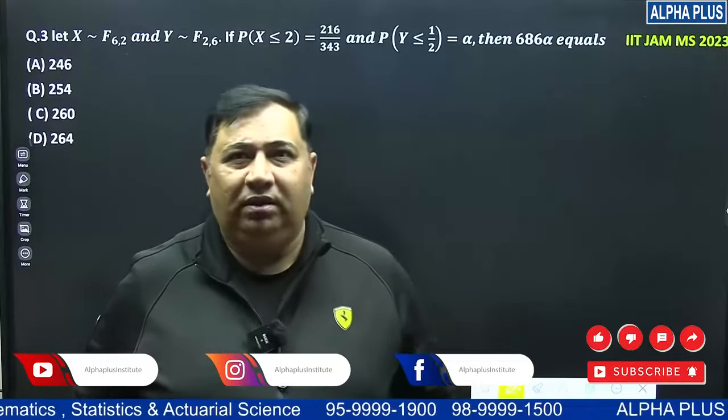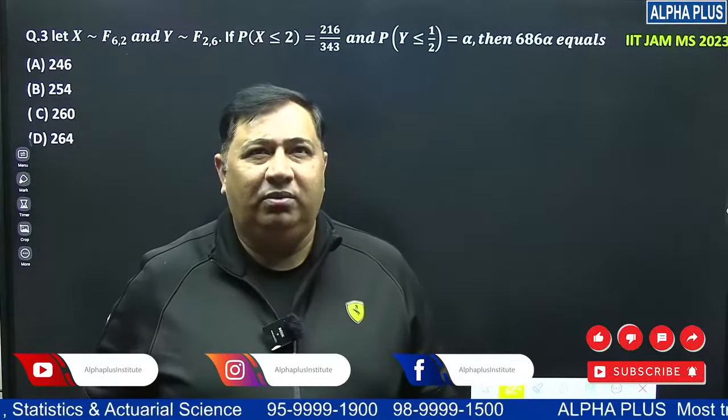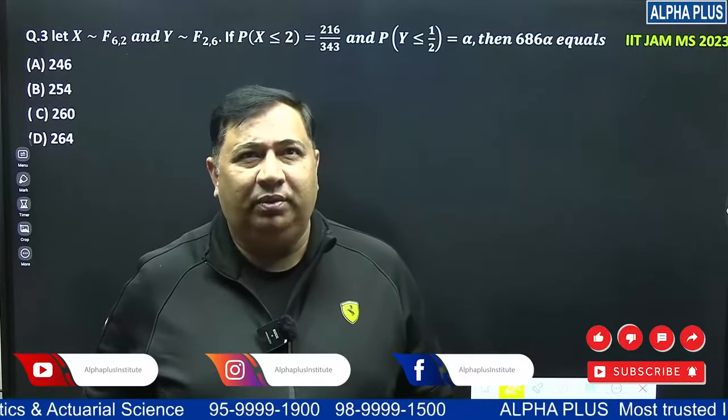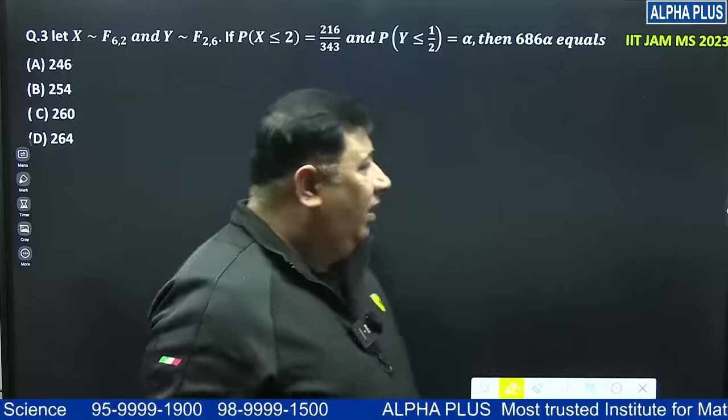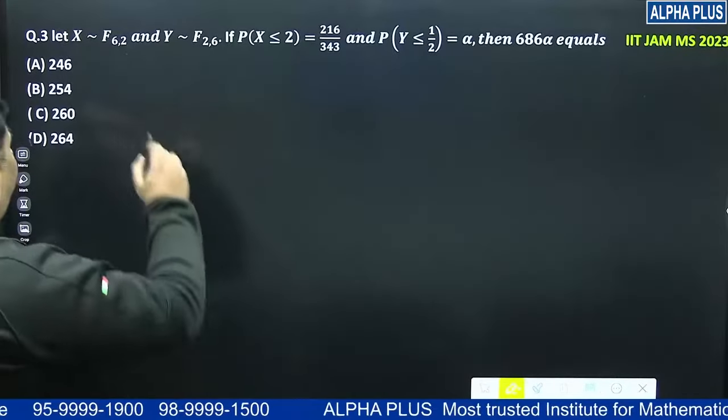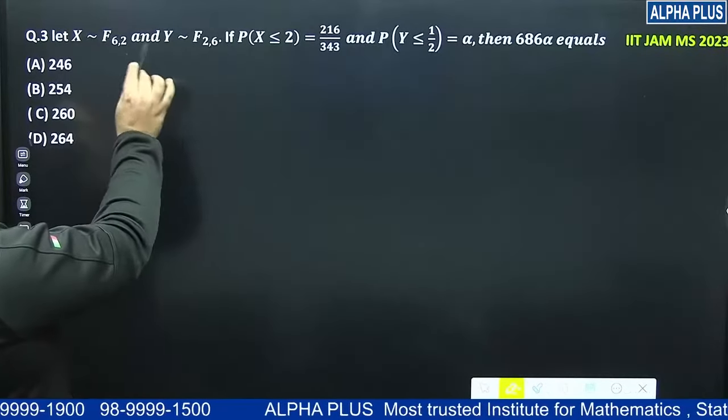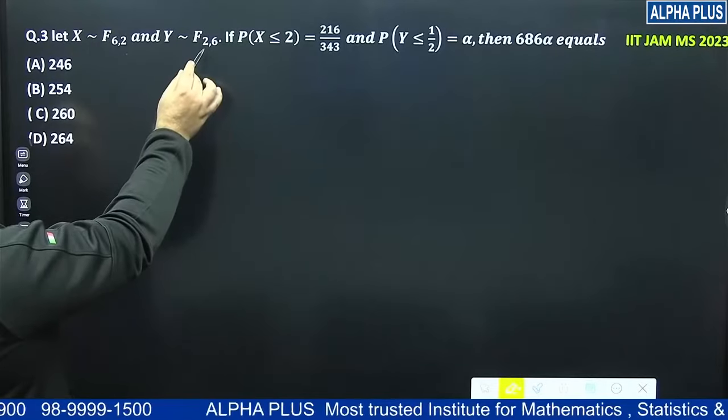Hello students, let me start IIT JAM 2023 with question number 3, the first question of statistics. Based on F distribution, information X follows F62 and Y follows F26. It means what?